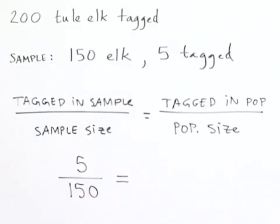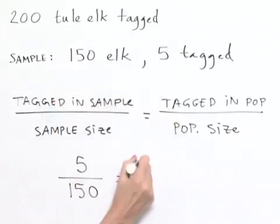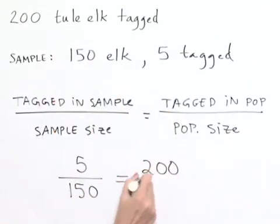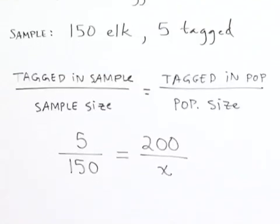And that's going to be equal to the number tagged in the population, which is 200, divided by the population size, which is our unknown. So we'll call that an x.